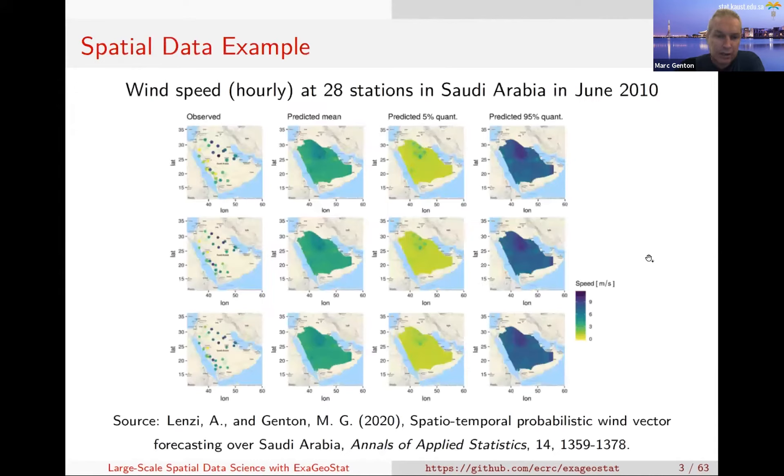The type of problem we're interested in is the setting where you have observations at a number of locations. Here you have 28 stations where you measure hourly wind speed over Saudi Arabia. The different rows correspond to different time points, and the colors are coded - darker blue indicates larger wind speed. The goal is to predict the wind speed at a new location where you don't have observation. This particular data set is analyzed in this paper here.